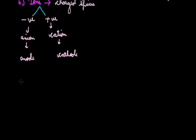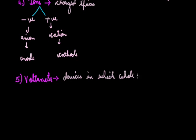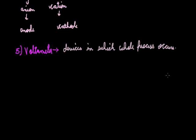Our next term is voltameter. It is the apparatus in which the whole process of electrolysis occurs. It contains the electrolyte and electrodes — that is, cathode and anode — which are dipped in the electrolyte solution.